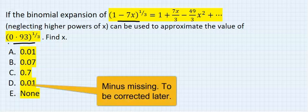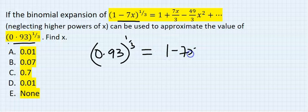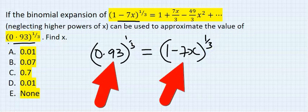So I'm going to have (0.93)^(1/3) is the same thing as (1-7x)^(1/3). Now I'm going to make this look like this.